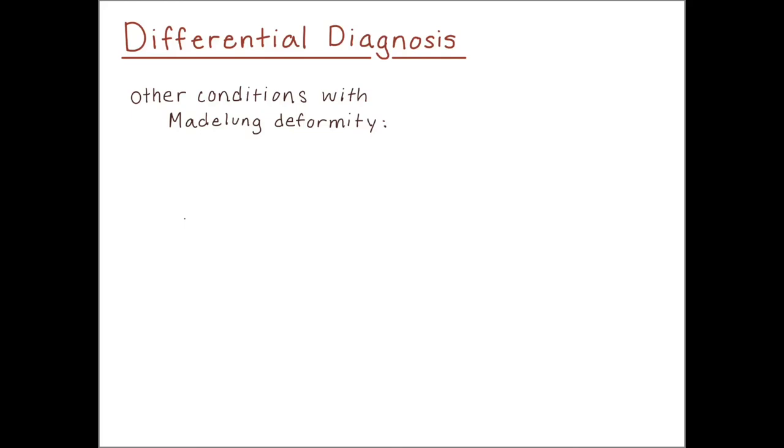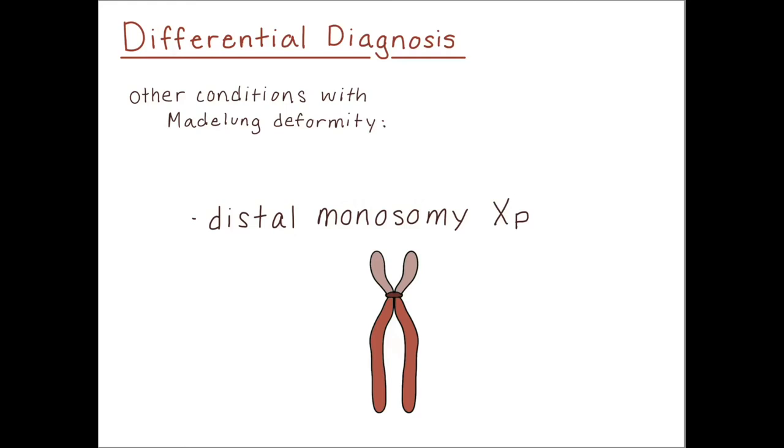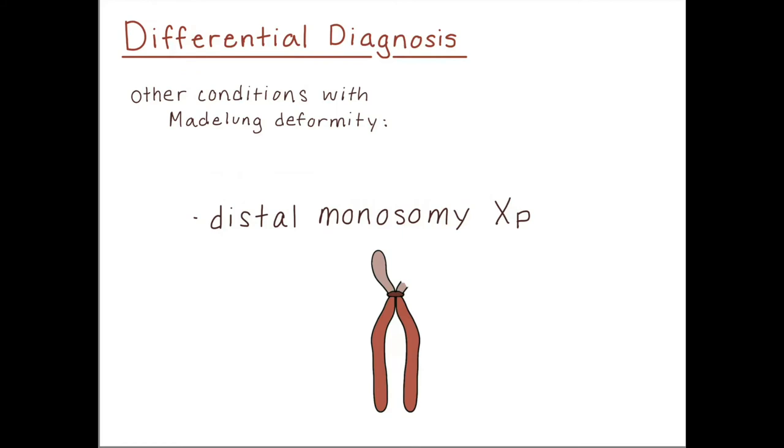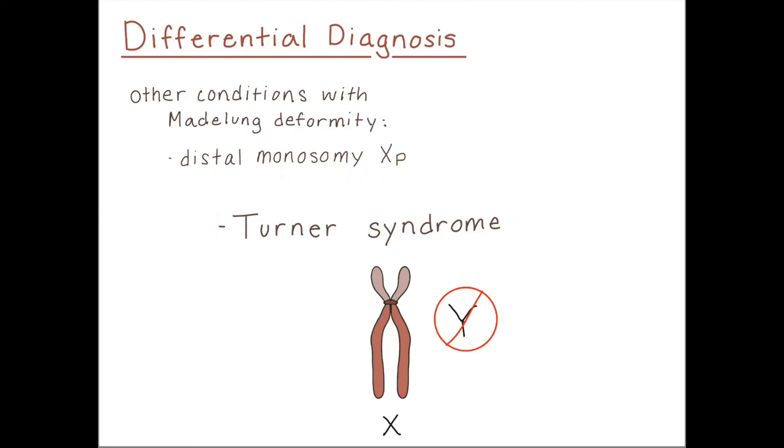There are a handful of other conditions that feature Madelung deformity. One is distal monosomy XP, where a large part of the short, or P-arm, of the X chromosome is missing. This is the part containing the PAR1 region and the SHOX gene. Another is Turner Syndrome, where a person has only one sex chromosome, an X.